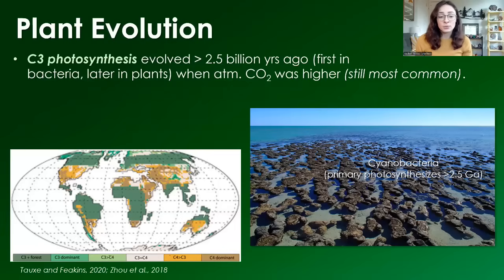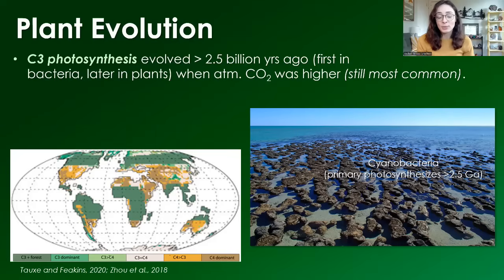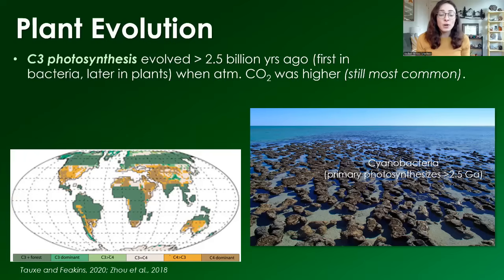In terms of when each of these evolved on Earth, C3 plants — or just C3 photosynthesizers in general — take the award for oldest by a long shot. These photosynthesizers first evolved over 2.5 billion years ago, not necessarily as plants — back then they were just bacteria that photosynthesized, like cyanobacteria, which are still around today. The important thing is that they evolved when the atmosphere had a lot more CO2 in it, which makes sense given how C3 photosynthesis works.